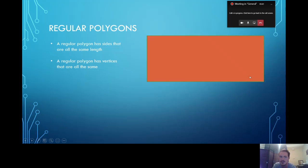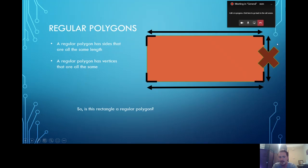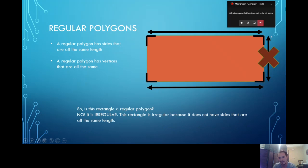Let's look at this shape and see if it's a regular polygon. Which shape is this? It's a quadrilateral and it's a rectangle. Let's look and see if the sides are all the same length. This side is the same as this side, but this side is not the same length. So it is not a regular polygon. Even though all the vertices are the same, it is not a regular polygon because it doesn't have sides that are all the same length — two of the sides are shorter than the other two. So this is called an irregular polygon.